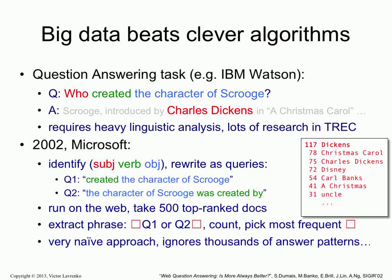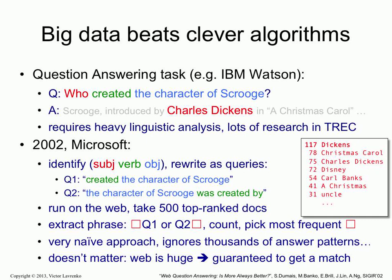You might look at this approach and say, well, this is very dumb, very simplistic. You are ignoring lots and lots of ways in which the answer could have been expressed — you're looking for this exact string created the character of Scrooge, so you're really killing your recall. But on the web it doesn't matter, because the web is huge. Even if you kill your recall, as long as you get enough matches you're fine. And on the web you will, because the web is huge. So if you have a big index, lots of data, you're guaranteed to get exact matches for strings. You can build really, really stupid systems.